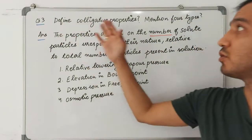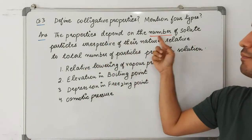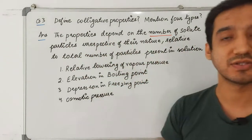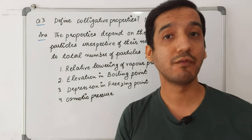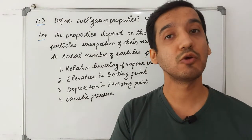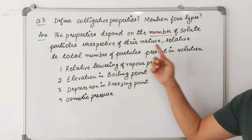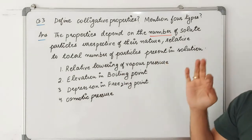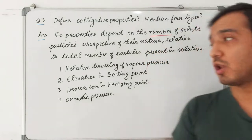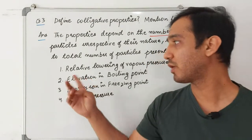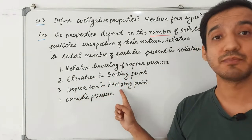Question 3: Define colligative properties and mention their four types. Colligative properties are properties which depend on the number of solute particles, irrespective of their nature. For example, one mole of glucose and one mole of urea have the same number of solute particles, so they show the same type of property.